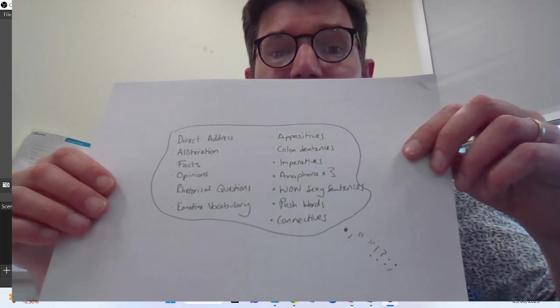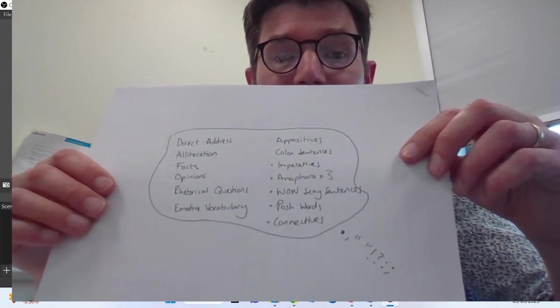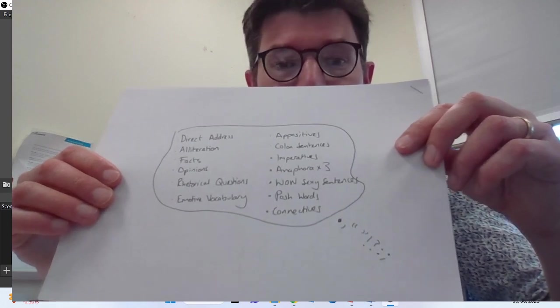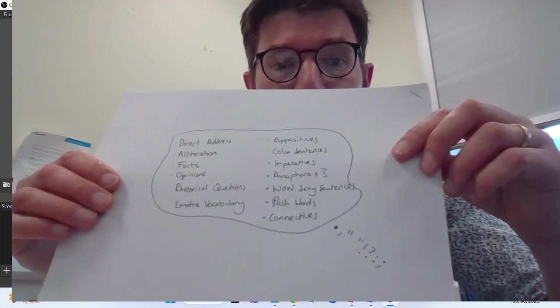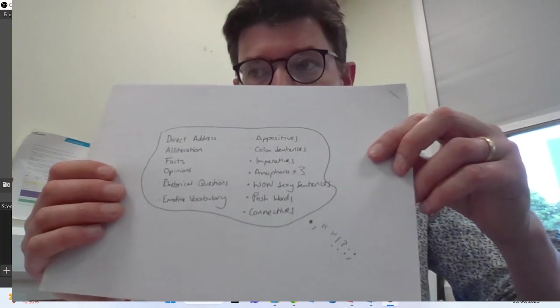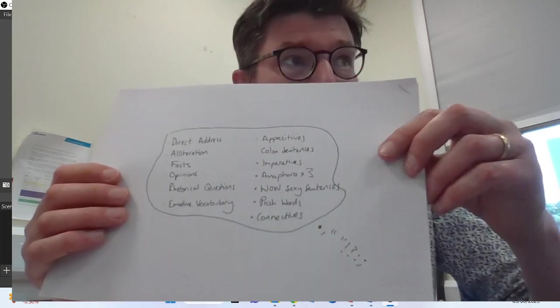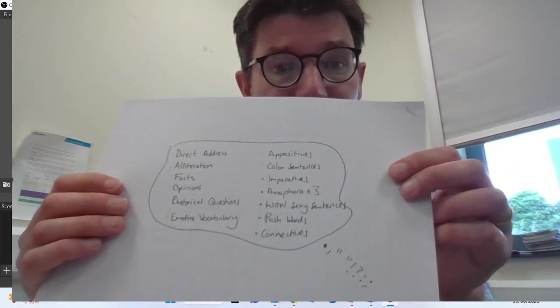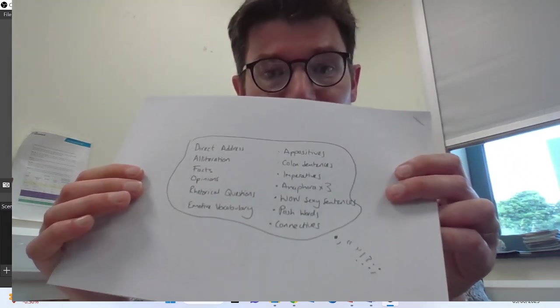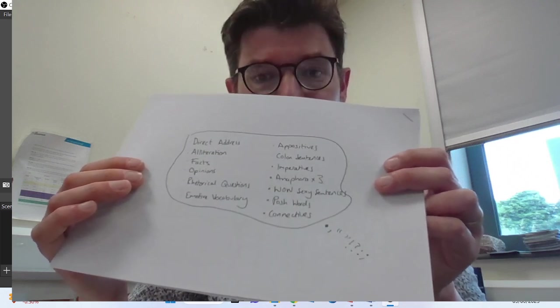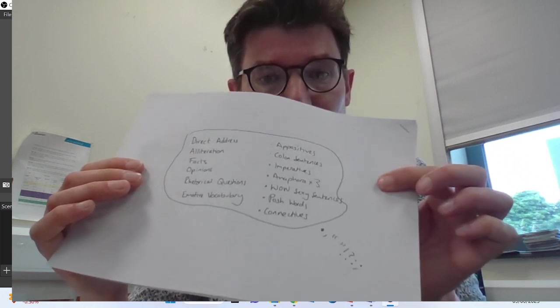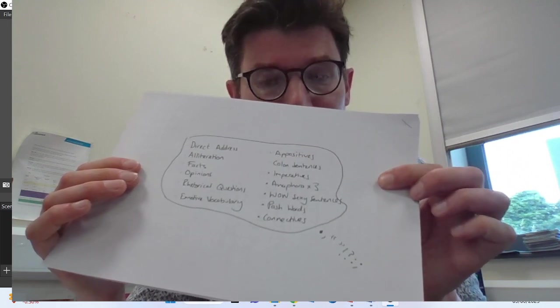Now you would not write down direct address, but you may just practice over the weekend. DAFORA - and I've got rid of the S, remember, for the rhetorical statistics. I don't really want made-up statistics. Direct address: you, we, us, our. Alliteration, you know that. Facts you can make up - don't make up facts, but you know facts. It is a fact that 16-year-olds are not allowed to vote. It is a fact that the world is getting hotter each year. Opinions, rhetorical questions, emotive vocab, appositives, colon sentence, imperatives, anaphora times three, wow sexy sentences, posh words, connectives, and then you've got the punctuation. That kind of thing is part of your plan that you tick off as you're going through after you've proofread every single paragraph.